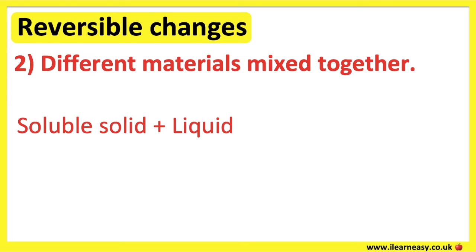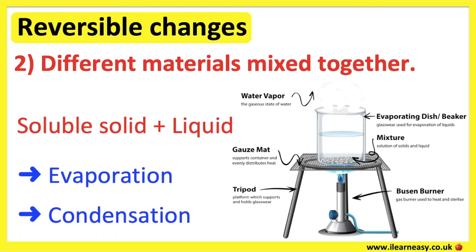The process of dissolving can be reversed by evaporation and condensation. Evaporation consists of heating the salt solution, which leaves behind the solid salt as the water turns into water vapor. Condensation consists of cooling the water as it evaporates.